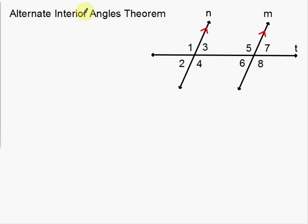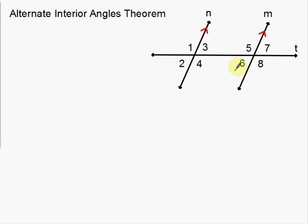Moving on — alternate interior angles theorem. We're using kind of the same picture, but we're only talking about the alternate interior angles — the angles in the middle: 3, 4, 5, and 6.